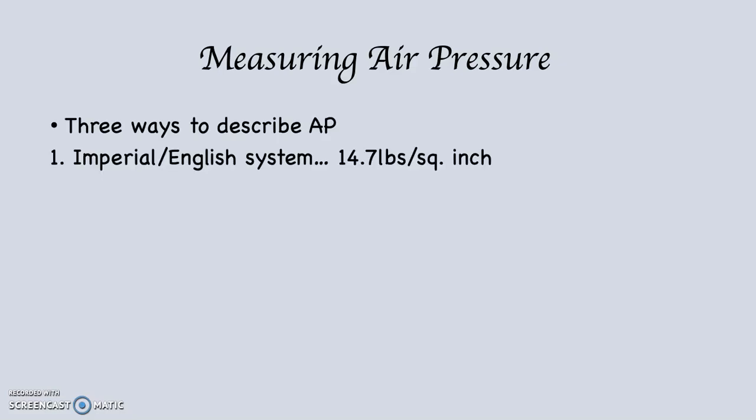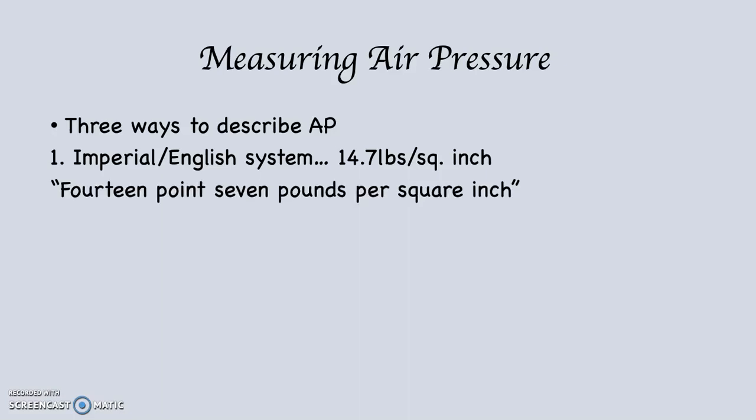Using the imperial or English system, average pressure at sea level is 14.7 pounds per square inch. That's 14.7 — not 14.71. That's LBS, which means pounds per square inch. When you articulate it, you say it like this: 14.7 pounds per square inch.